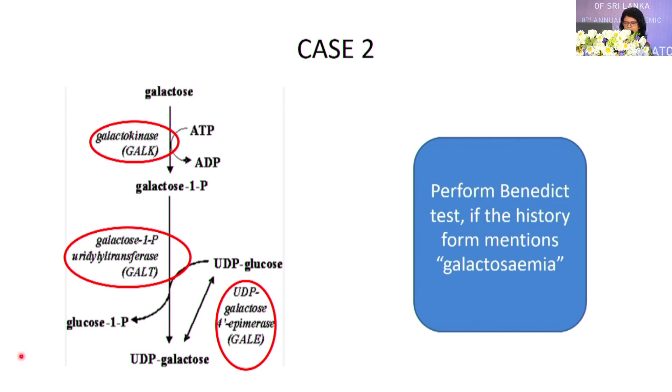So there are two take-home messages from your urine tests: the Rothera's test for ketones, and the Benedict test for reducing substances.